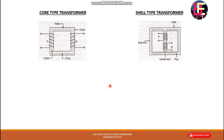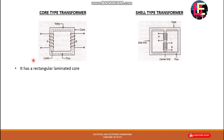Core-Type and Shell-Type Transformers — this is the basic figure. In the core-type transformer, there are rectangular-type limbs. It has a rectangular laminated core, with primary and secondary windings placed on the limbs.